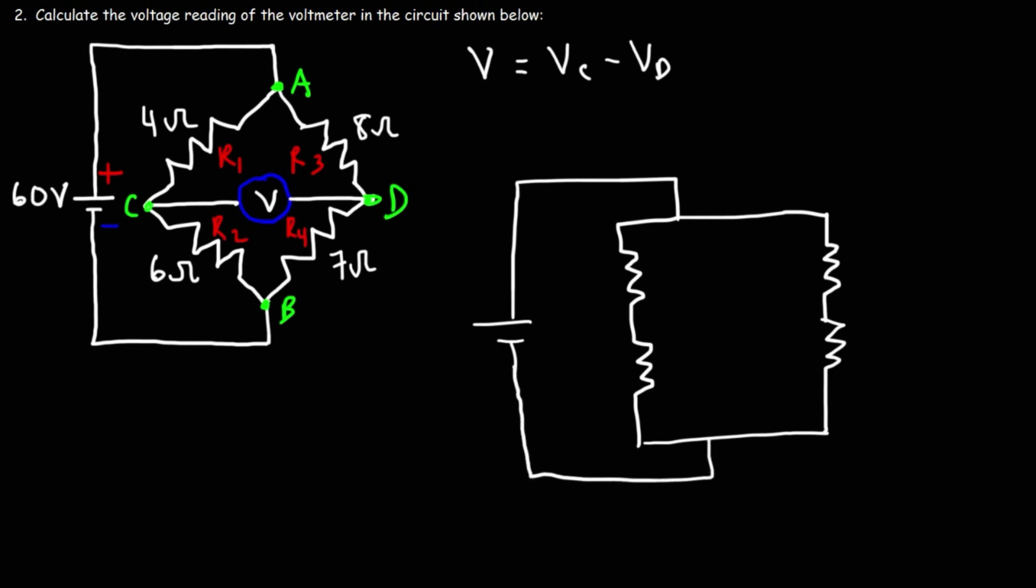So because of that, the equivalent circuit that we have looks something like this. So in this circuit, there is no connection between point C and D. They're virtually disconnected. Now, we know the potential at B is zero. And the potential at A is 60, because that's the voltage of the battery.